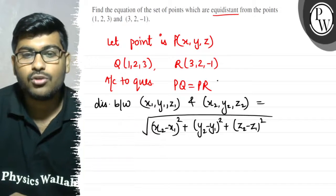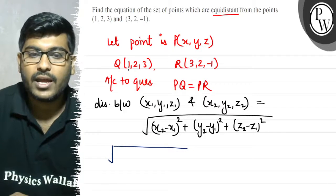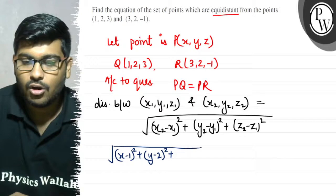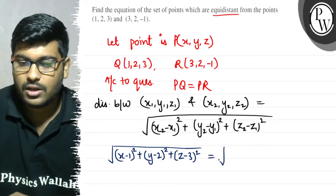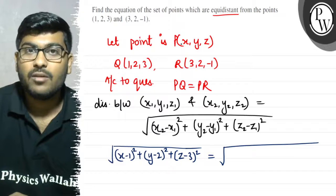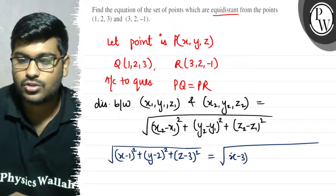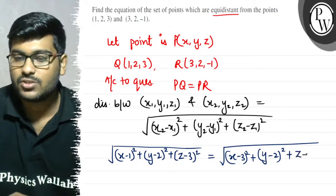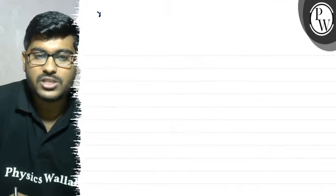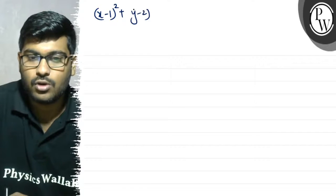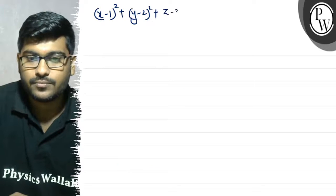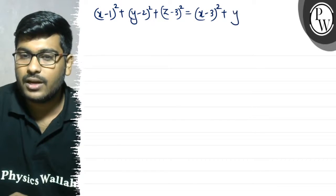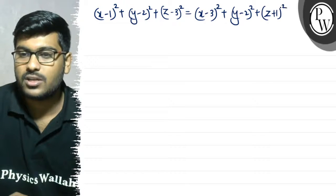So if PQ equals PR, then PQ means root of (x-1) whole square plus (y-2) whole square plus (z-3) whole square, and PR means root of (x-3) whole square plus (y-2) whole square plus (z+1) whole square. Setting PQ equal to PR and squaring both sides: (x-1)² + (y-2)² + (z-3)² = (x-3)² + (y-2)² + (z+1)².